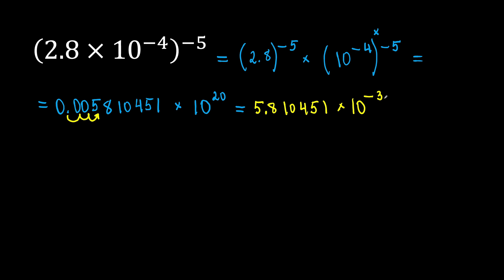Why negative 3? Because we have a number that is less than 1 and we move the decimal point three places to the right. So, we got 0.005 and then we got 5.8. The exponent on 10 is negative.